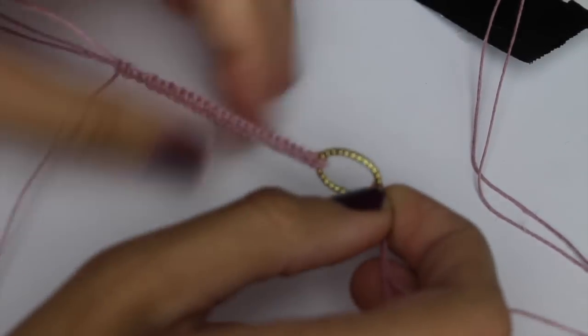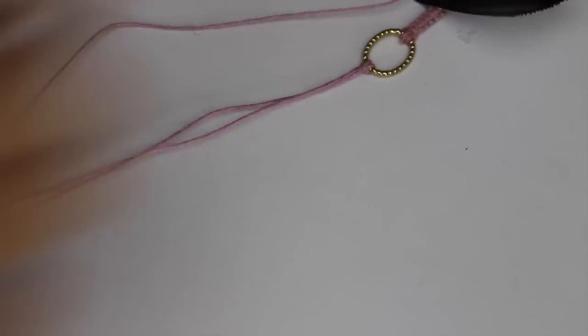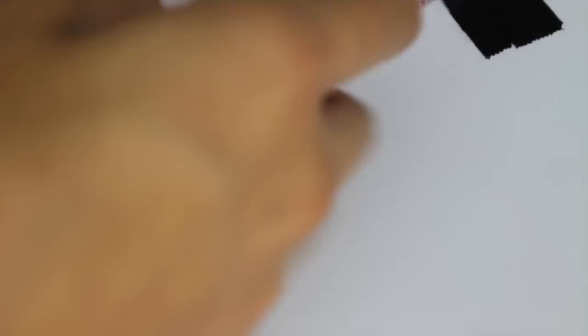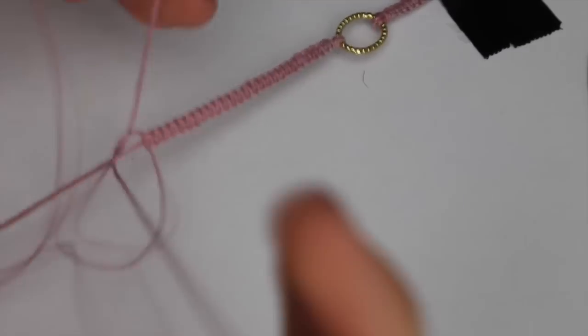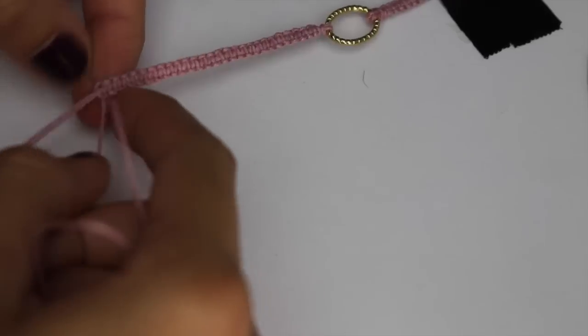Once you have it about the length that you think you need, then just flip it over, tape that side down, and do the exact same thing with the other side. Once you measure that to your wrist and you think it's about the right size, then you're just going to string the two outer pieces of hemp twine with one of those thick needles so that it'll go through.